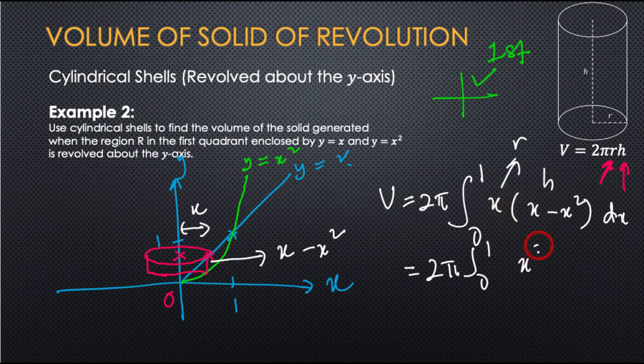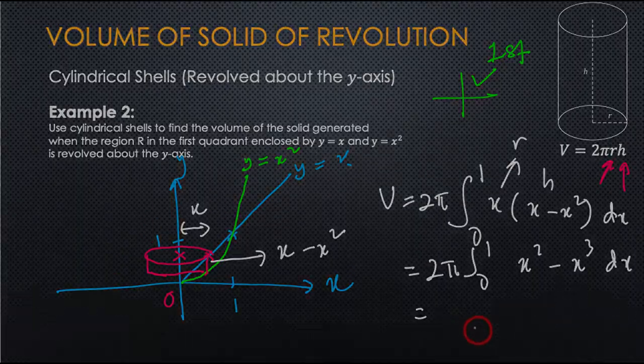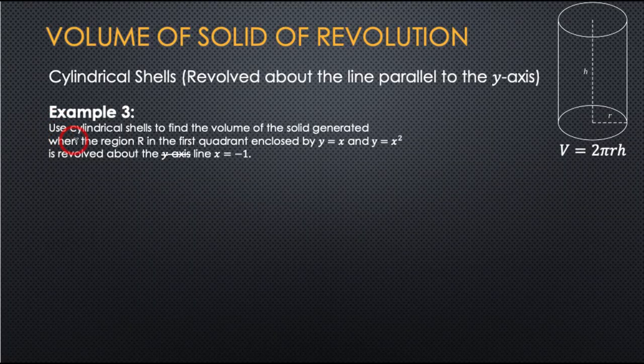So V = 2π · ∫ from 0 to 1 of x(x − x²) dx = 2π · ∫ from 0 to 1 of (x² − x³) dx, and the answer is π/6.